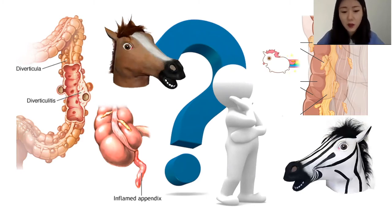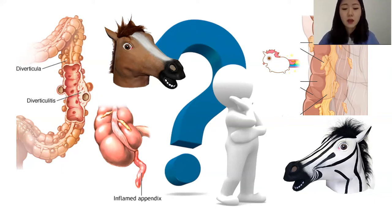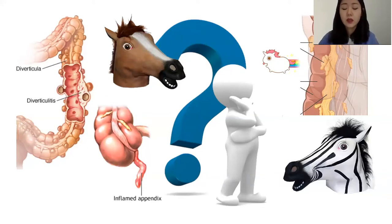I picked this topic because even though it's a zebra, it actually accounts for up to 77% of suspected diverticulitis cases — so it's relatively rare but still important. This case also shows why imaging is critical, because clinically it's hard to distinguish from other differentials. Epiploic appendagitis is self-limiting, meaning no surgical or medical treatment is needed — just basic pain management, and it usually resolves within a week. Imaging helps prevent unnecessary surgeries.